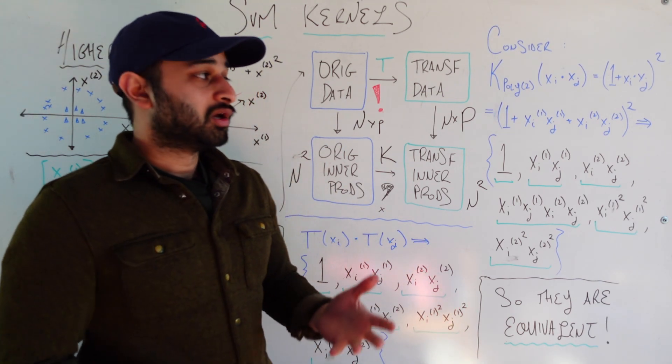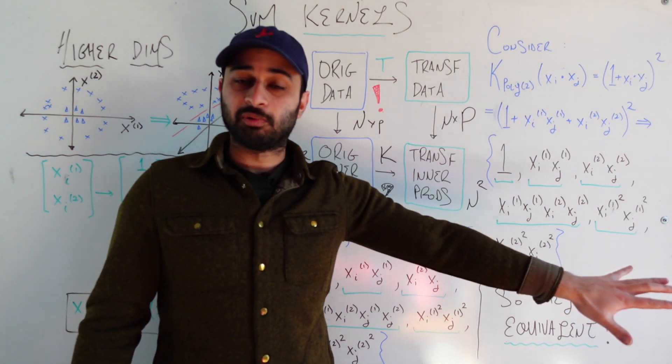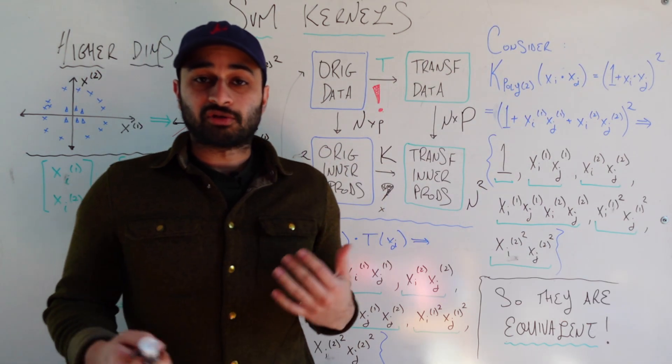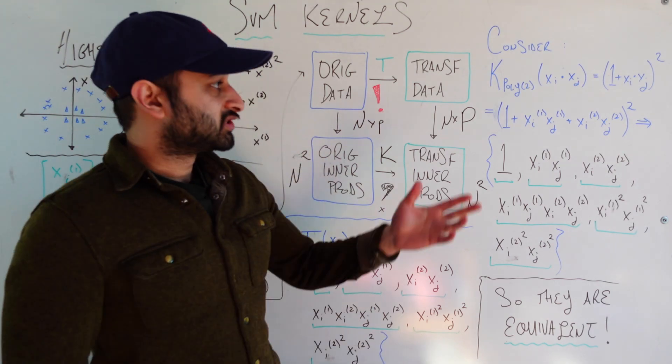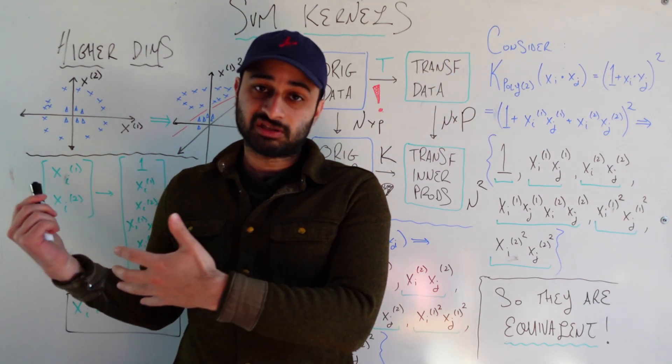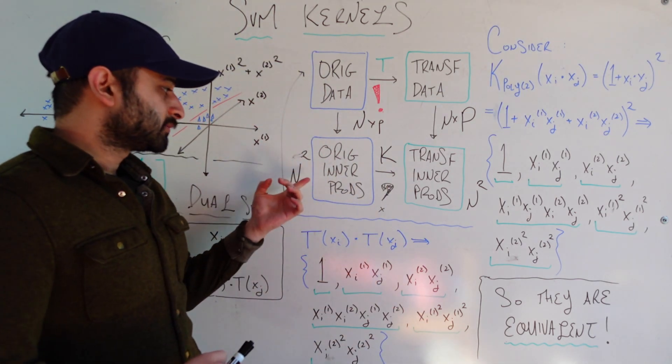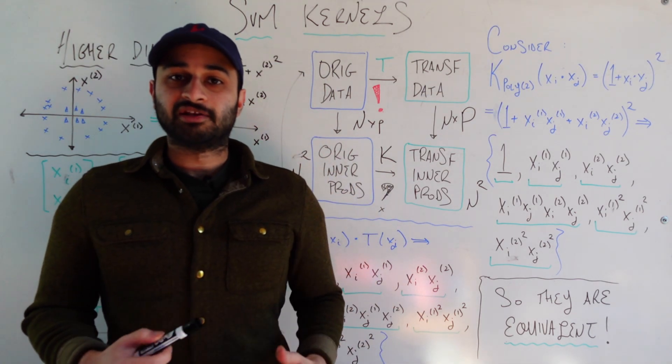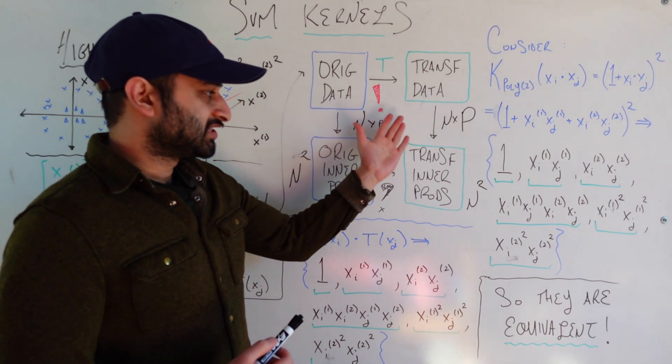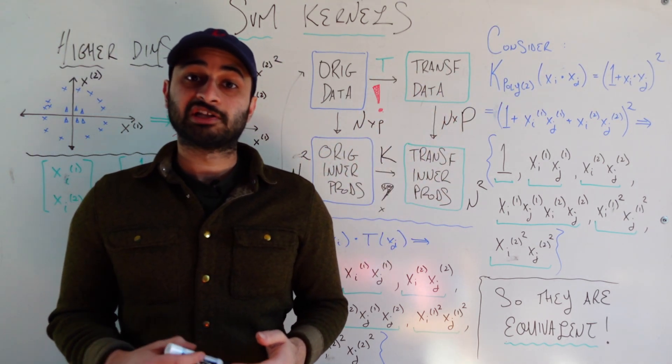And why it's important is we avoid ever sending our data to this high dimensional space, but we still get all of the benefits. And so the final thing I'll say in this video is that this is called a kernel function. And in general, a kernel function is, in the context of SVM at least, any function that only uses the inner products of the original data and is able to use those inner products and send them, or do some kind of operation to send them to the inner products of the transformed data, without ever visiting the transformed space itself.